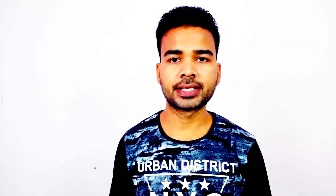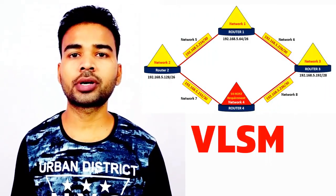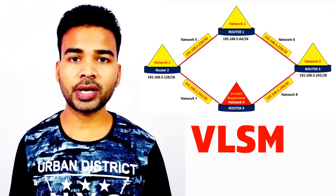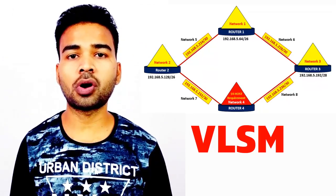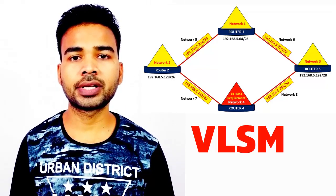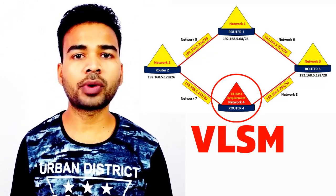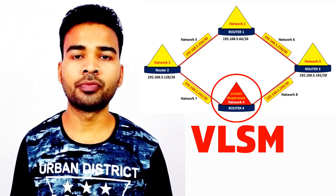In my last video on VLSM, I had asked you one question where I had asked you to put the IP address and the subnet mask for the network number 4 with the help of VLSM. As you can see in the given diagram, all the IP addresses for all the networks are mentioned but only the IP address of network number 4 is missing. We are going to find the IP address for network number 4 with the help of VLSM. If you have not yet watched my previous video on VLSM, I highly recommend you watch that video because I have explained everything about VLSM from the beginning. Check the link in the description section below. Now let's get back to the computer screen and find out the IP address and subnet mask for network number 4.